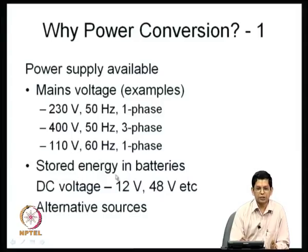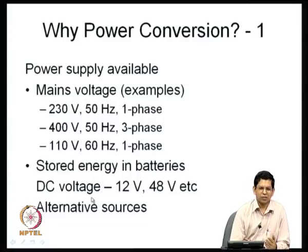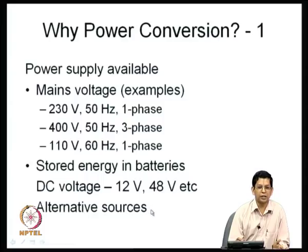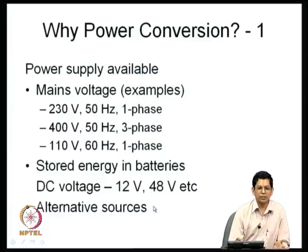Another source of power is stored energy in batteries, which provide DC voltage. You connect batteries in series and parallel and may get outputs like 12 volts or 48 volts with some regulation. Sometimes you may also rely on alternative sources such as solar cells or fuel cells, where a solar cell gives a particular DC output — that is the form in which power is available.